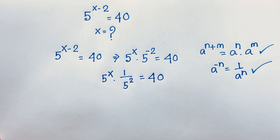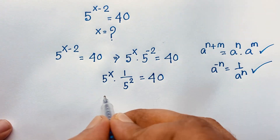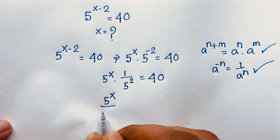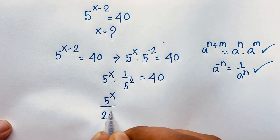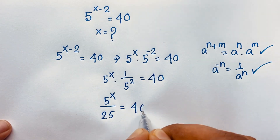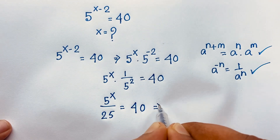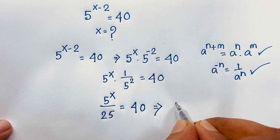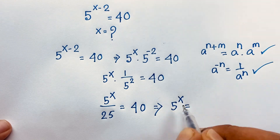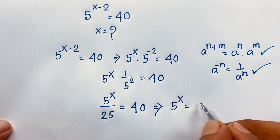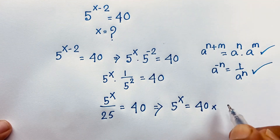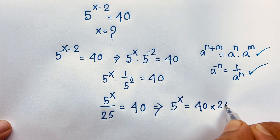Now, you can see this expression: it will be 5 to the power x over 25 is equal to 40. So, 5 to the power x is equal to 40 times 25.